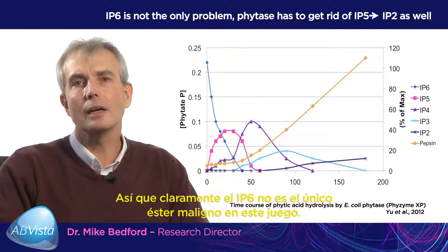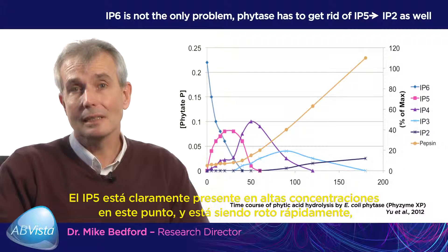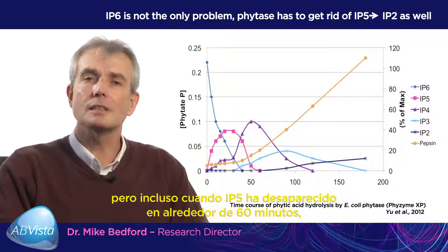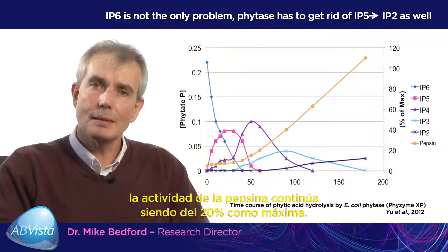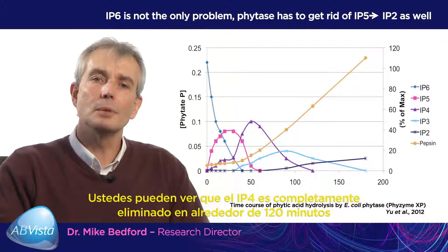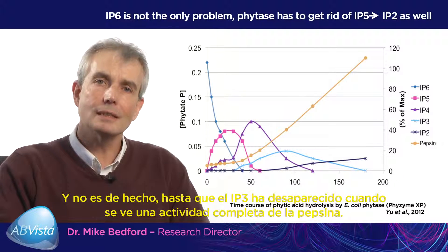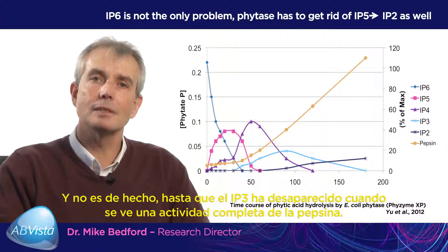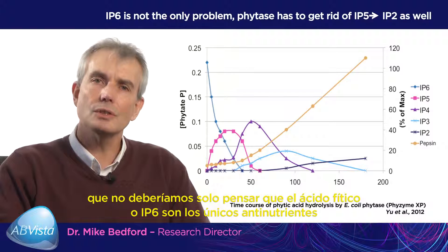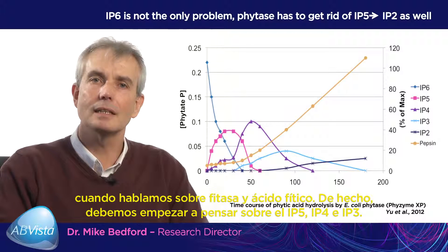So clearly IP6 is not the only malevolent ester in this game. IP5 is clearly present at high concentrations and has been broken down rapidly, but even when IP5 has disappeared at around 60 minutes, the activity of pepsin is still only 20% of maximum. IP4 is completely removed at about 120 minutes and still the pepsin is only 70% active. It's not until IP3 has disappeared that you see full activity of the pepsin. This is the first piece of in vitro work suggesting we should not think of IP6 as the only anti-nutrient when we talk about phytase and phytic acid.